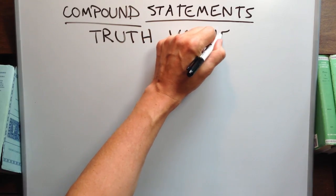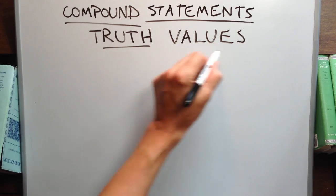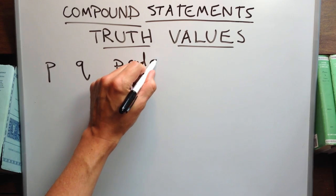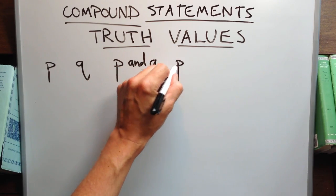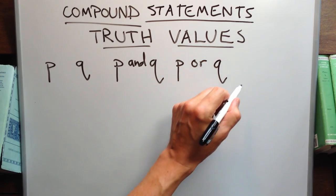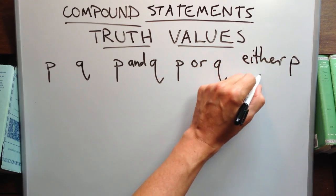Whether a compound statement is true or false depends on whether the component statements are true or false. To illustrate, let's make a table with a column for P, a column for Q, a column for P and Q, a column for P or Q, and a column for either P or Q.